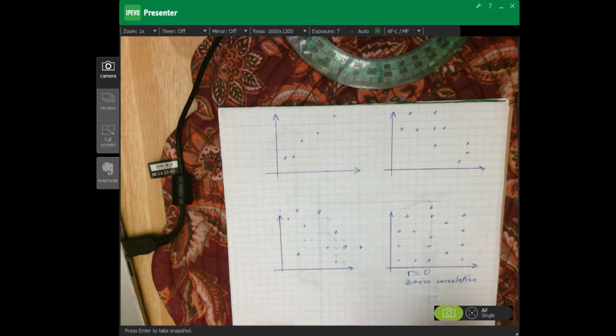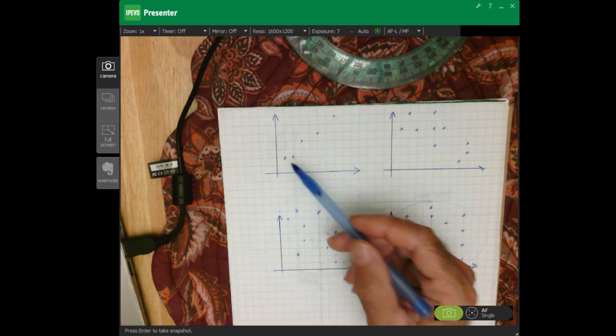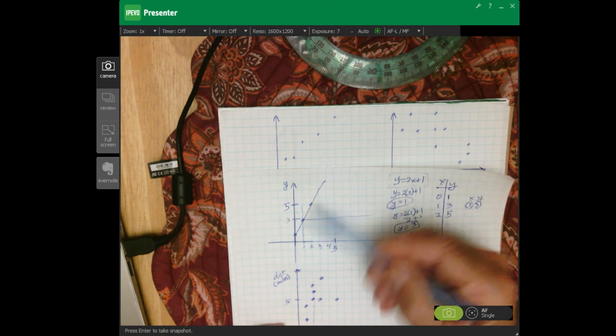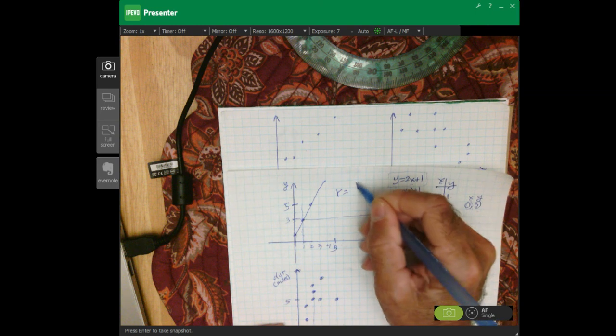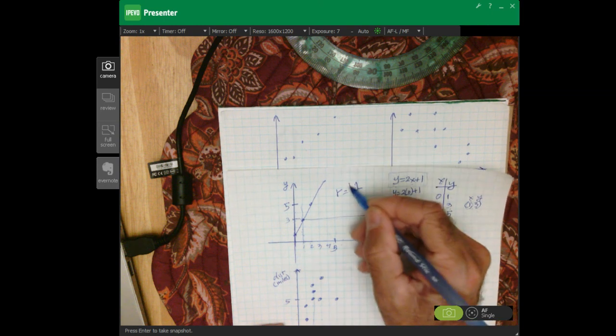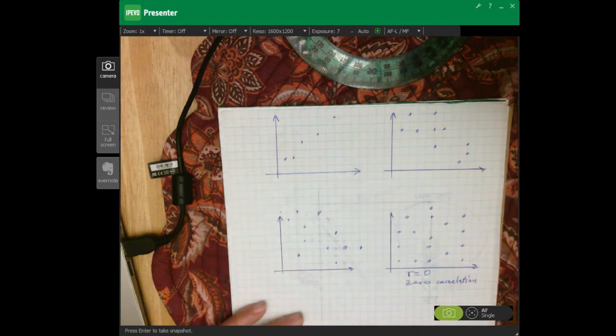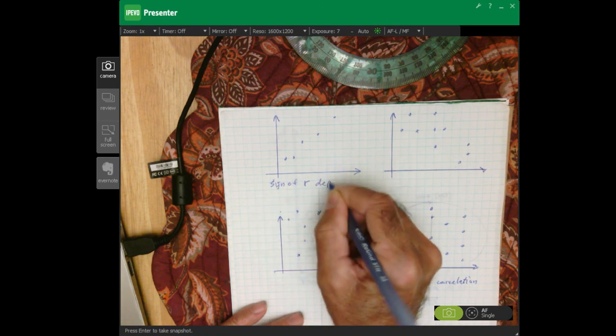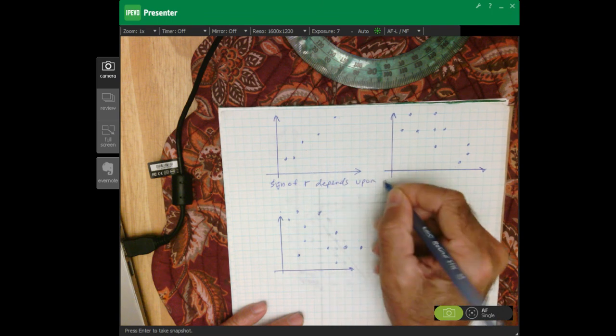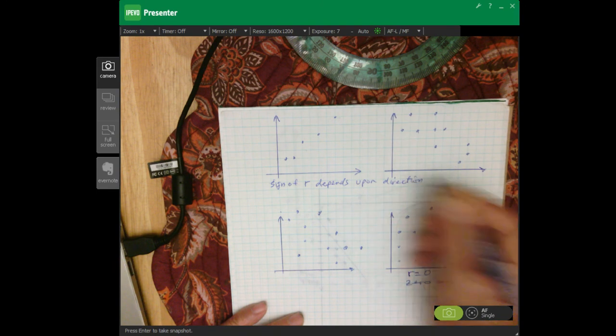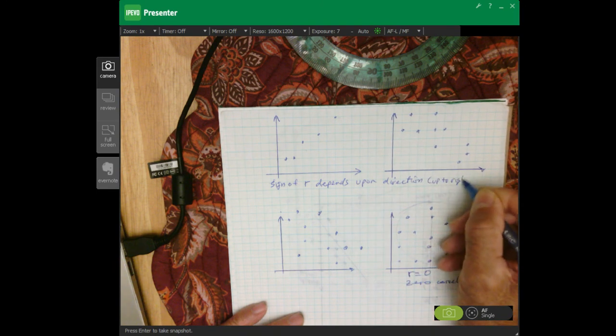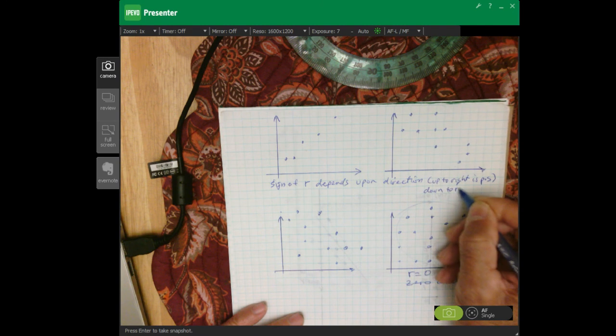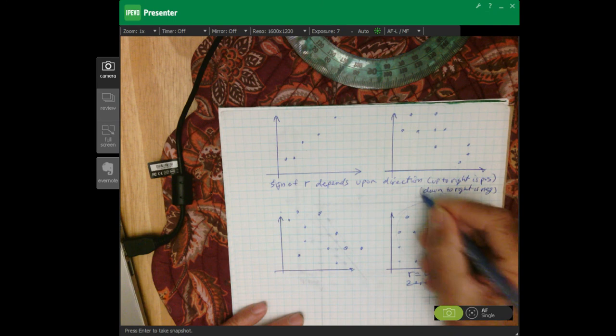The other ones are going to depend on two different things. It's going to determine how close they are to forming a straight line. Like this one forms a perfect line right here. On this one, R would be equal to one. And it would be positive because it goes up to the right. So the sign of R depends upon the direction. In other words, up to the right is positive.